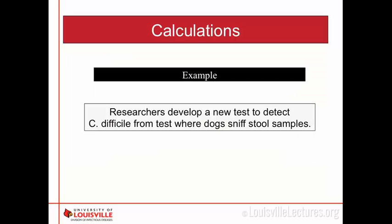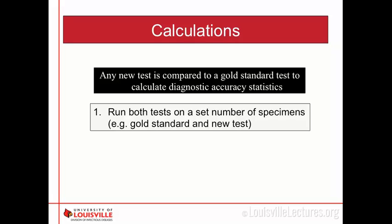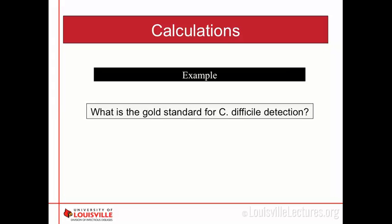The first example we're going to lead through this presentation with is that researchers have developed a new test to detect C. diff where dogs sniff stool samples. You want to know how good your new test is compared to the gold standard. Any new test is compared to the gold standard test to calculate diagnostic accuracy statistics. You want to run both tests on a set number of specimens — the gold standard and the new test.